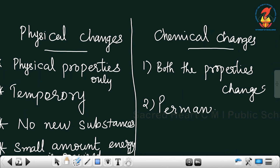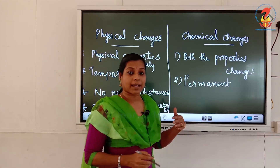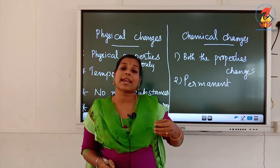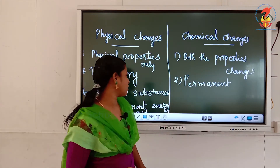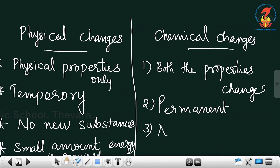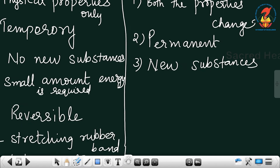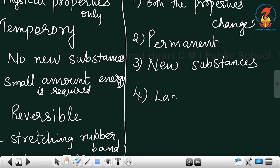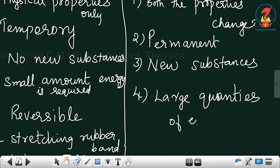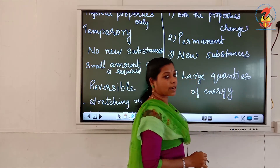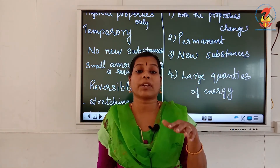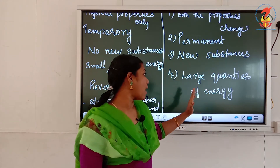Chemical change is a permanent change — we cannot bring it back. We cannot convert that ash back to paper, so it is a permanent change. New substances are produced — from the paper we got ash. For burning the piece of paper, a lot of energy is required. Large quantities of energy are involved, either absorption or evolution in the form of heat or light — the amount of energy required is larger.